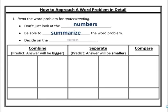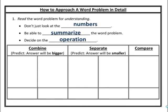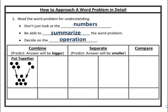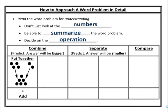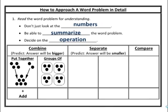At this point we decide on the operation. To do that, we need to figure out the situation. We can think: combination, separation, or comparison. If it's combining, your answer will likely be bigger. There are two ways to combine: you may see things put together — one pile plus another pile makes a bigger pile, which is addition. Another way to combine is if the groups are equal — you take multiple equal groups and put them together, making a bigger group — that's multiplication.